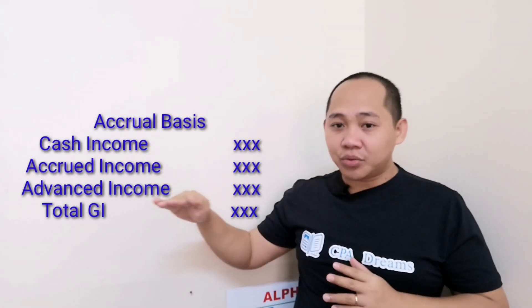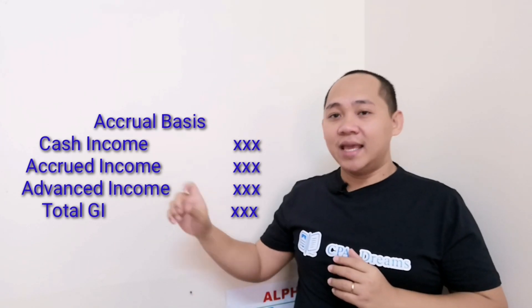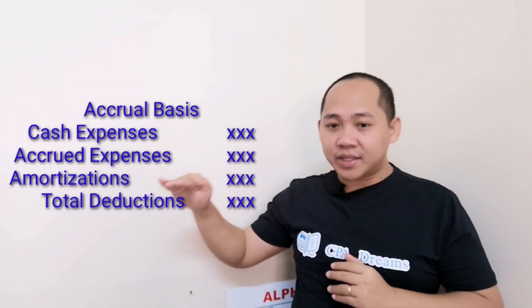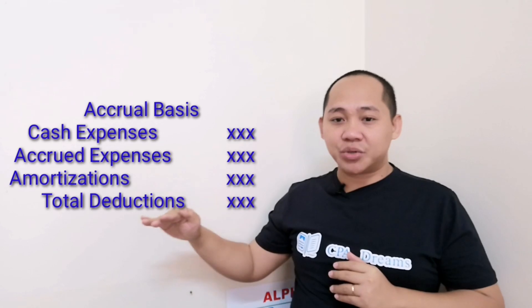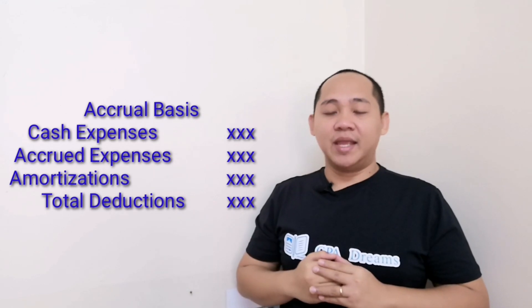How to calculate gross income under accrual basis and cash basis: for tax accrual basis, income is determined as cash income plus accrued income plus advanced income — that total is your gross income. For expenses under tax accrual basis, you have cash expenses, accrued expenses, amortization of prepayments, and depreciation of capital expenditures as your total deductions.